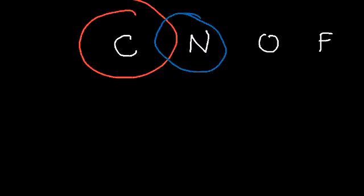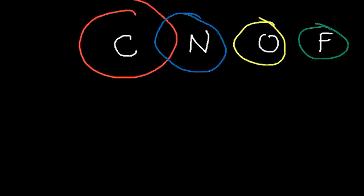Let's understand why. In the periodic table, we have elements like carbon, nitrogen, oxygen, and fluorine. So why is carbon much bigger than nitrogen, and nitrogen bigger than oxygen, and oxygen bigger than fluorine? Why does atomic size decrease as you go to the right?